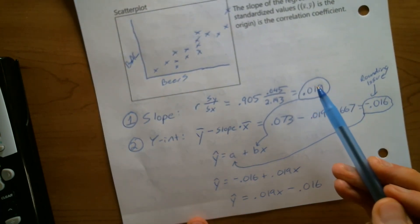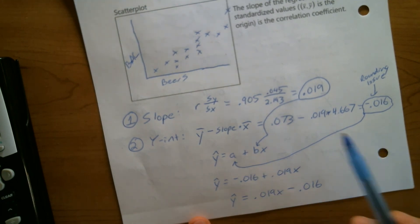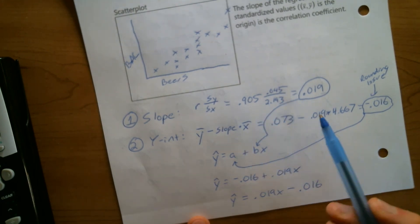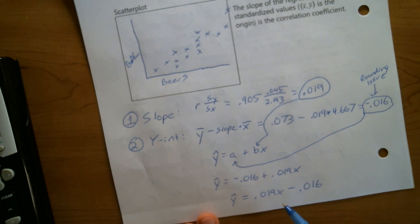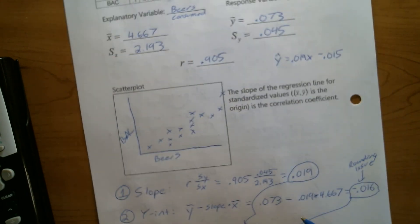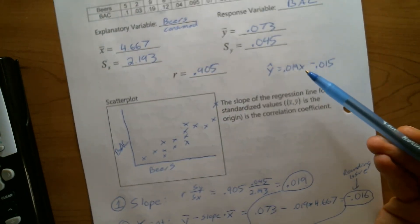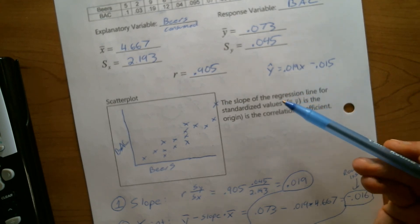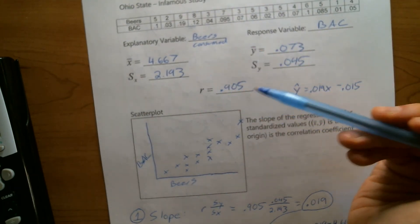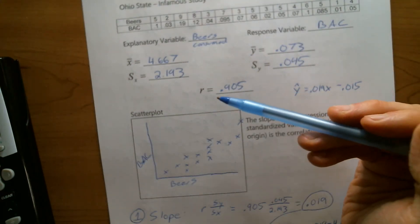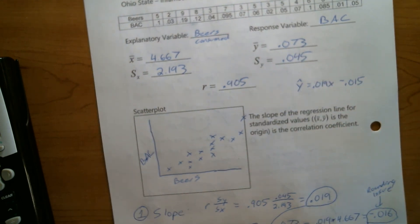This is just showing you where the regression equation comes from on the calculator — it's not pulled out of thin air. It's based on different aspects of the variables: their correlations, their standard deviations, and their means.